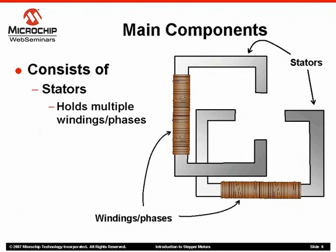A stepper motor has some basic components. First, we have a soft iron stator. As the name implies, this is a stationary component. Each stator will be wrapped with multiple windings or phases. These will be energized using a voltage source that, when applied, will initiate current flow through the winding, producing a polarity on each end or pole of the stator.